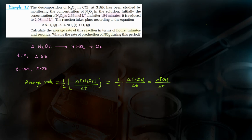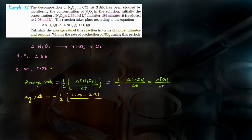Now you have the values of N2O5 concentrations, so we will calculate the average rate from here. Average rate = −(1/2) × (2.08 − 2.33) / 184 minutes. The numerator gives −0.25, and after multiplying by the factor and calculating, the value comes out to 6.79 × 10⁻⁴ mol per liter per minute.